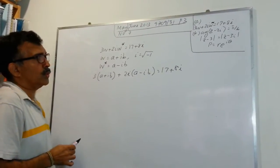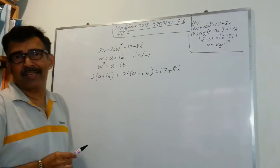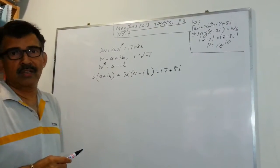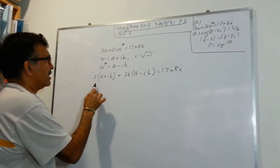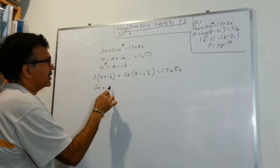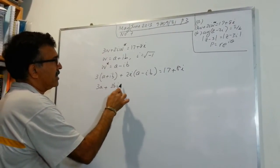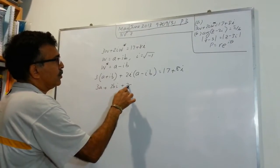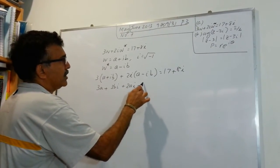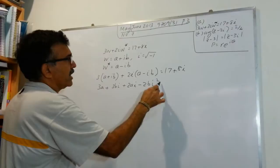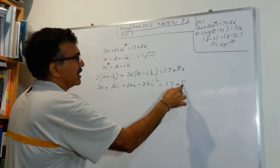We are going to clean this line up and use the idea of equality of complex numbers. So let's write 3A plus 3BI plus 2AI minus 2BI squared equals 17 plus 8I.